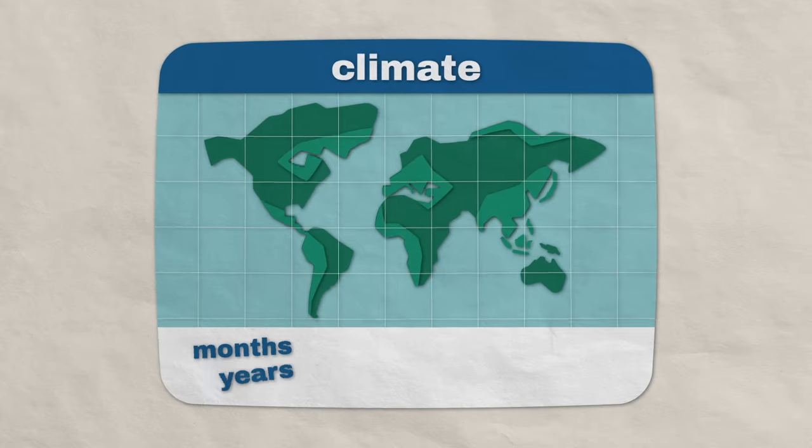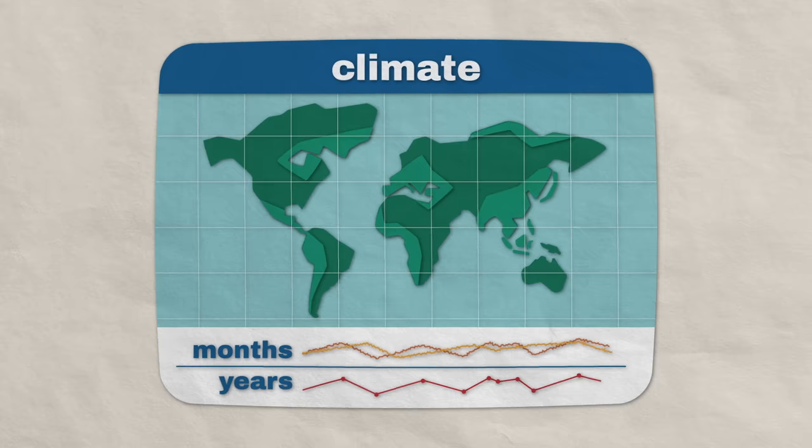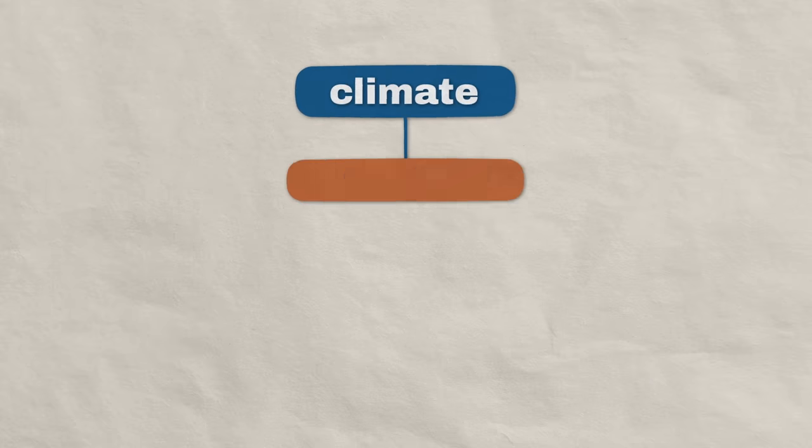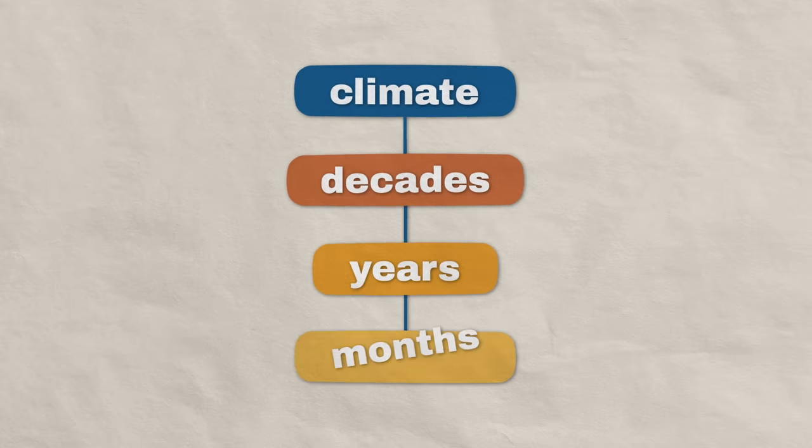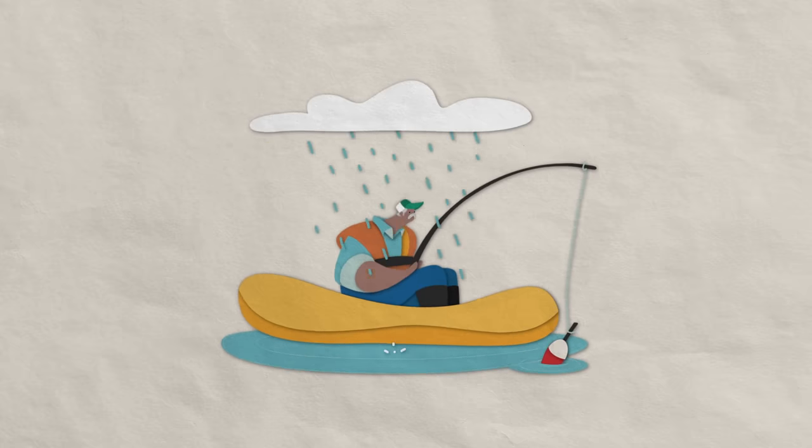Climate describes a region's average atmospheric conditions over periods of a month or more. Climate predictions can forecast average temperatures for decades to come, but they can't tell us what specific weather events to expect.